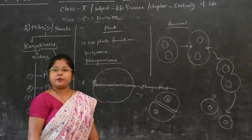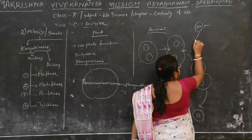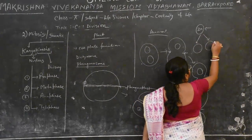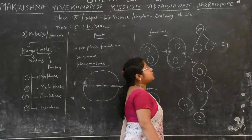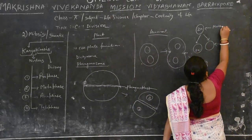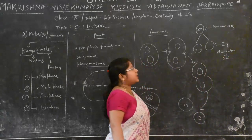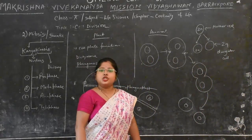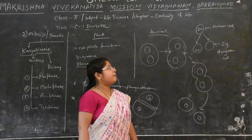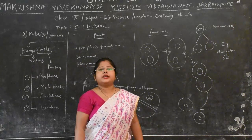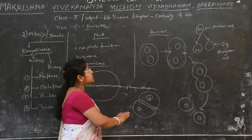Mitosis is the type of cell division where a diploid mother cell divides into two daughter cells that are quantitatively and qualitatively similar to the mother cell. The number of daughter cells obtained as a result of mitosis is two. The daughter cells are genetically identical to the parental cell and contain equal numbers of chromosomes and equal quantities of cytoplasm.